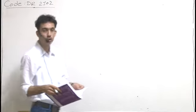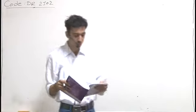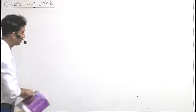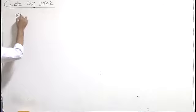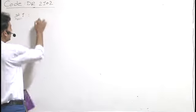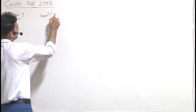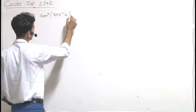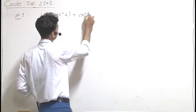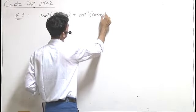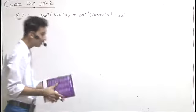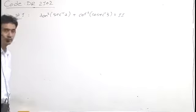In this question we have two statements, Statement 1 and Statement 2. We will analyze them one by one. Statement 1 states that tan²(sec⁻¹2) minus sec⁻¹2 plus cot²(cosec⁻¹3) equals 11. We will check the validity of this statement.